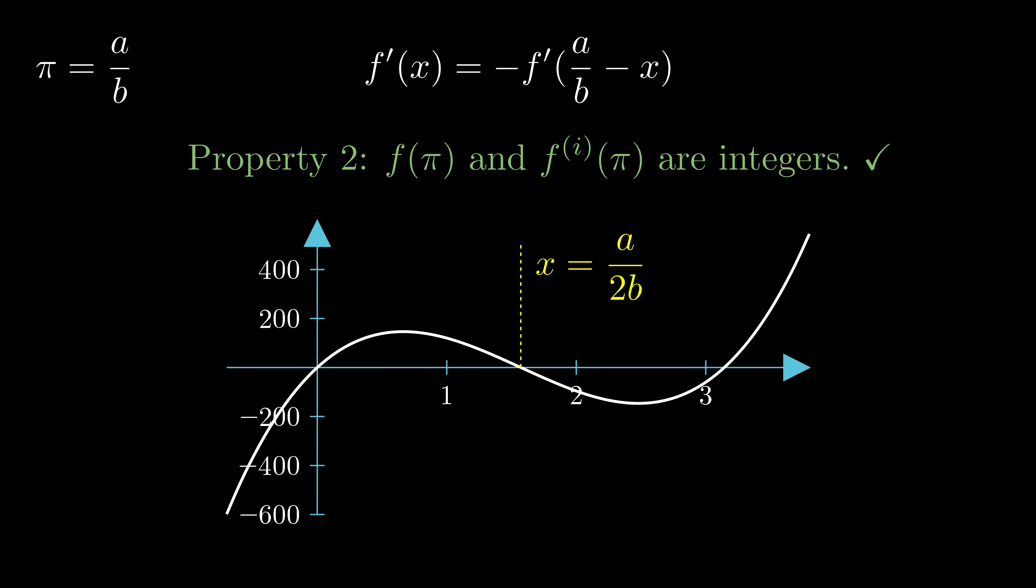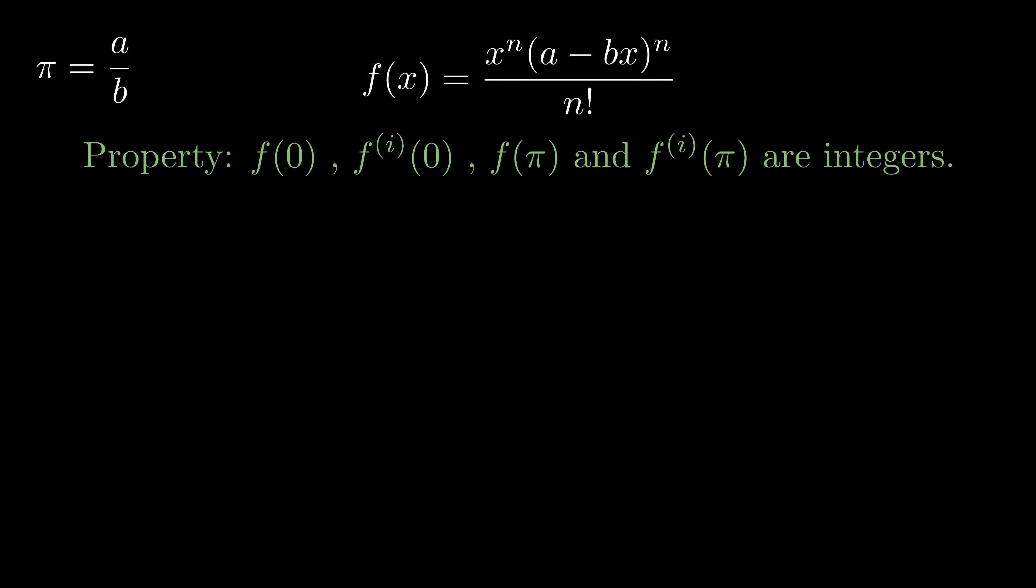Now we are going to put those two properties to use. Before constructing this big F(x), let's summarize what we have. We have this small f(x). It is very well behaved that its values at both zero and pi and its derivatives at both zero and pi to arbitrary orders are all integers.